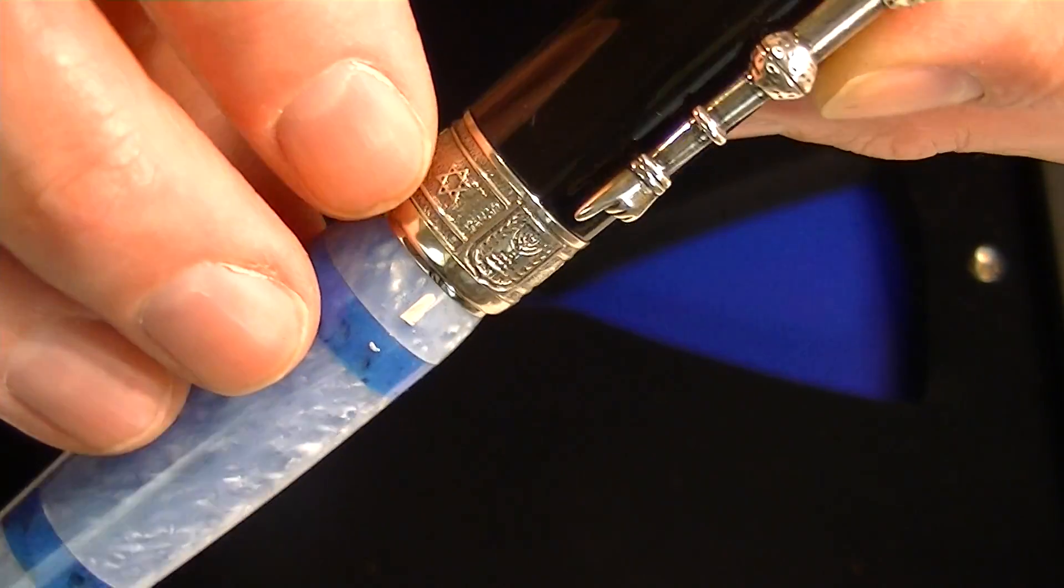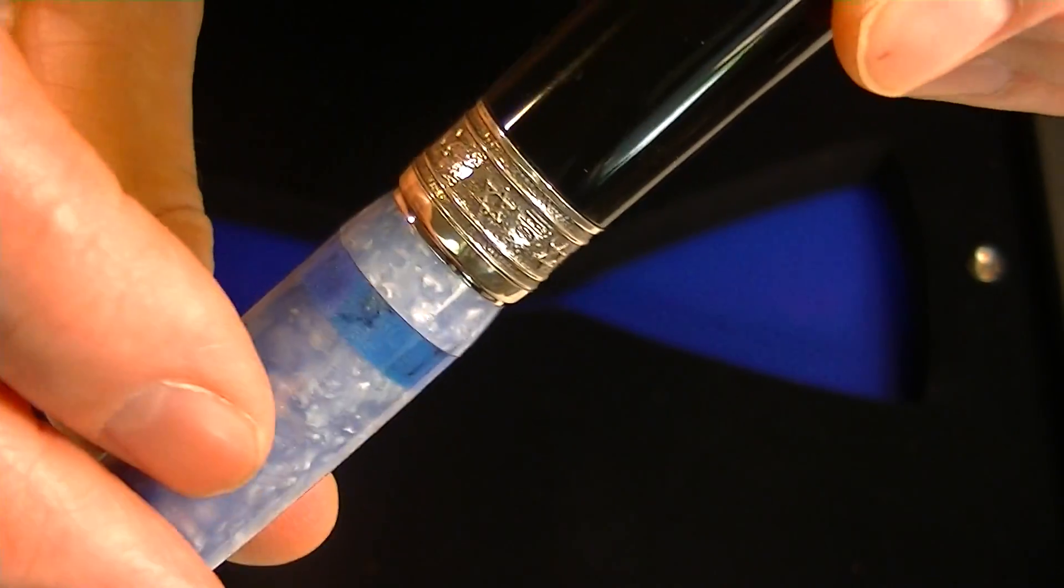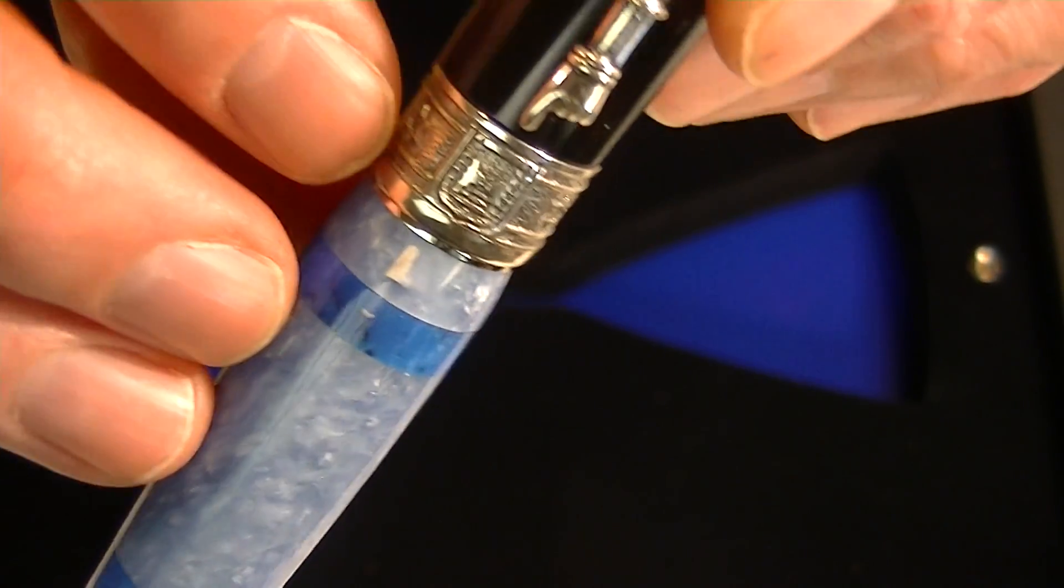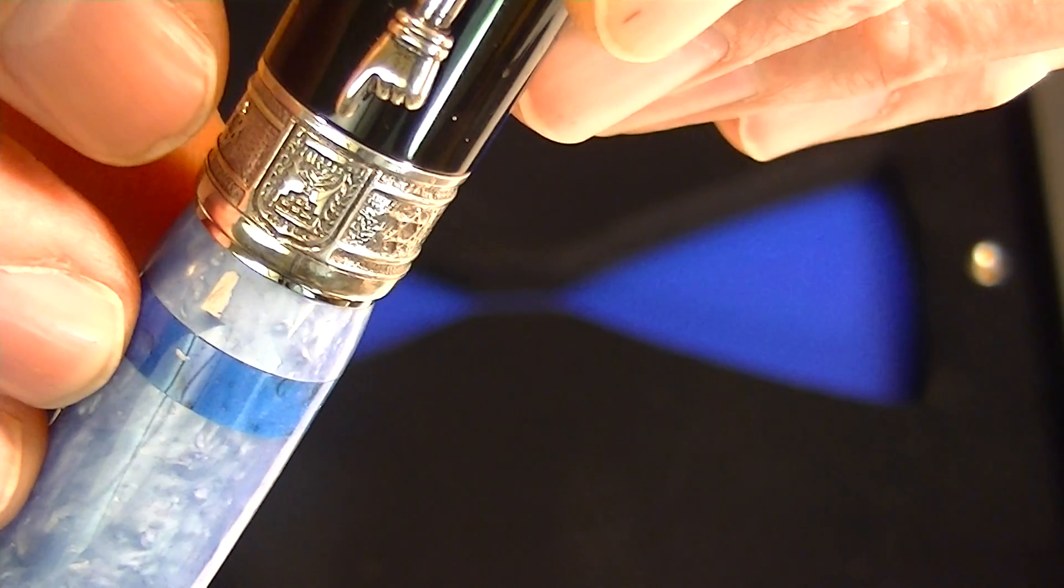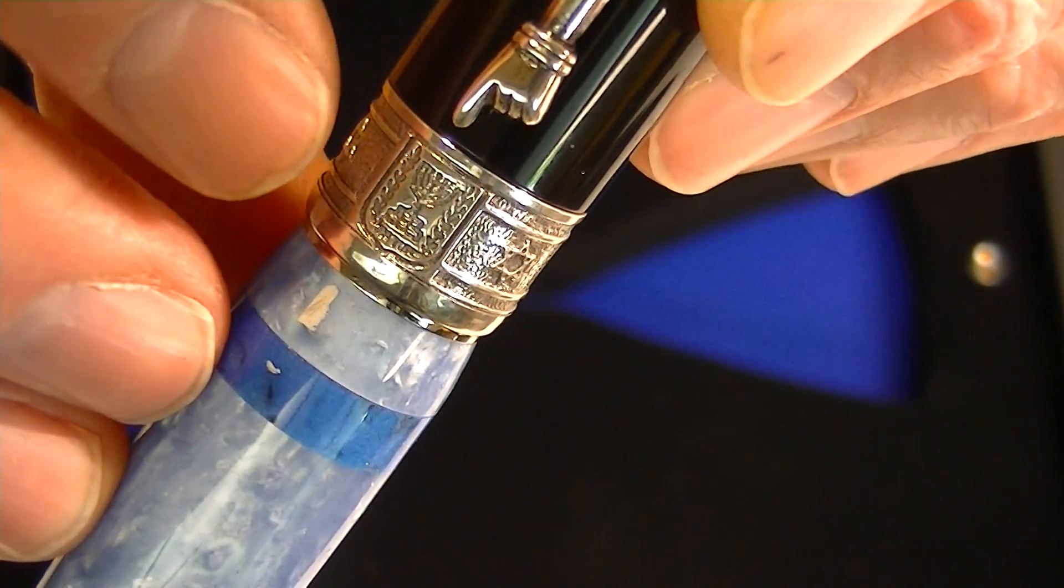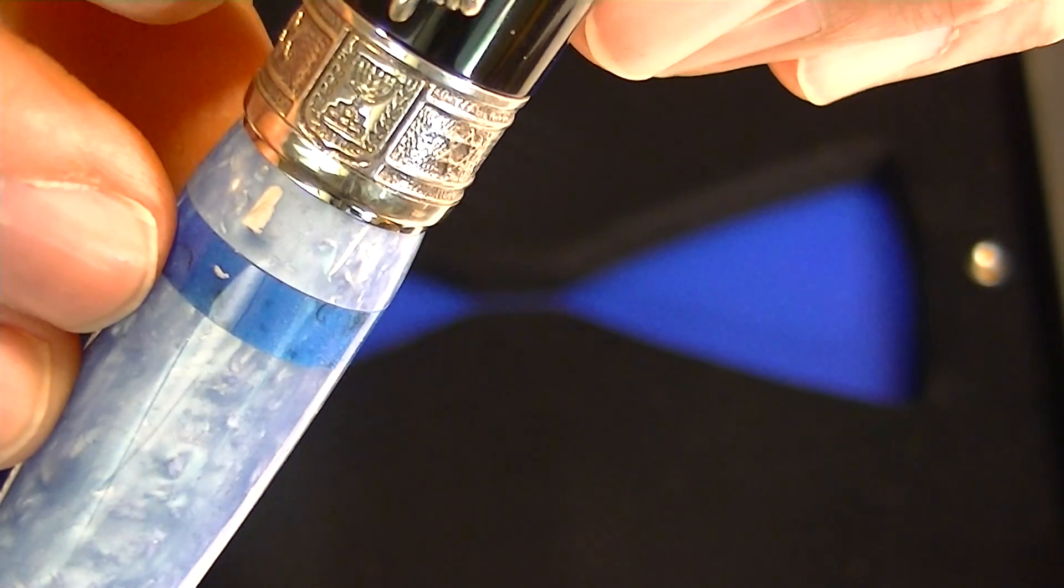On the center band we have a nice broad band with the menorah as well as two olive branches, which symbolize peace. The menorah is the state symbol of Israel.